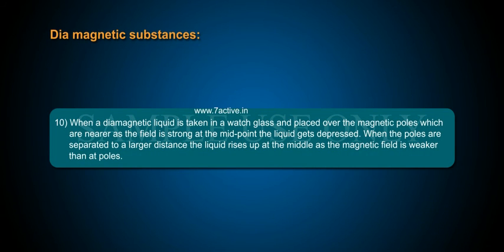When a diamagnetic liquid is taken in a watch glass and placed over the magnetic poles which are nearer, as the field is strong at the midpoint, the liquid gets depressed. When the poles are separated to a larger distance, the liquid rises up at the middle as the magnetic field is weaker than at poles.